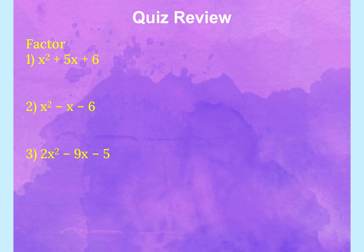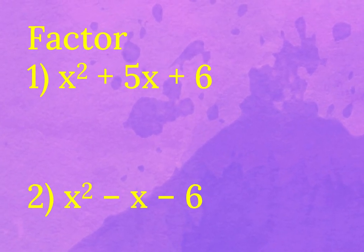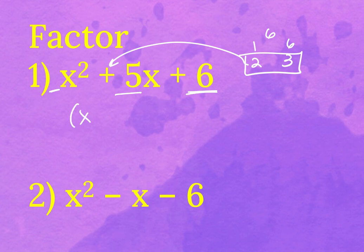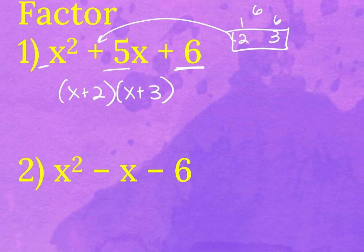For problems one and two, where there's nothing in front of the x squared term, you do not need to do first times last. I'm seeing that a lot — you're still doing first times last, putting that in, and then factoring by grouping, and it's taking extra time. If there's nothing in front of the x squared term, you're just looking for the factors of the last number that sum to the middle.